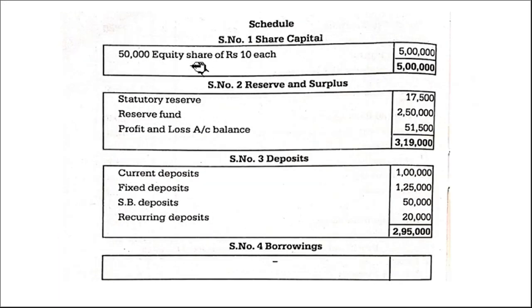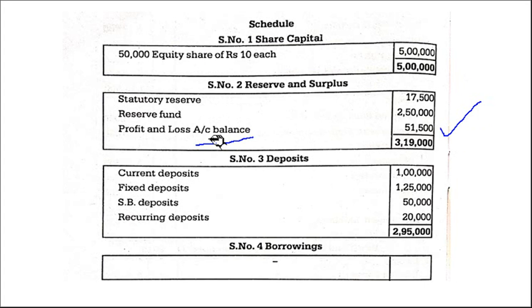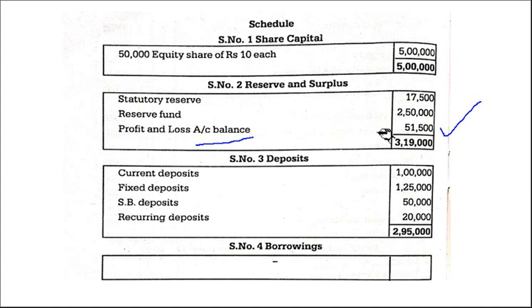Where does 51,500 go? Profit and loss account in reserves and surplus. So under reserves and surplus you can leave some space and continue with other things — because you have to write the reserve fund from the trial balance, and the statutory reserve transferred from appropriation, and the profit and loss account balance remaining after all appropriations. Whatever remains after making all appropriations — that is what we are writing here.